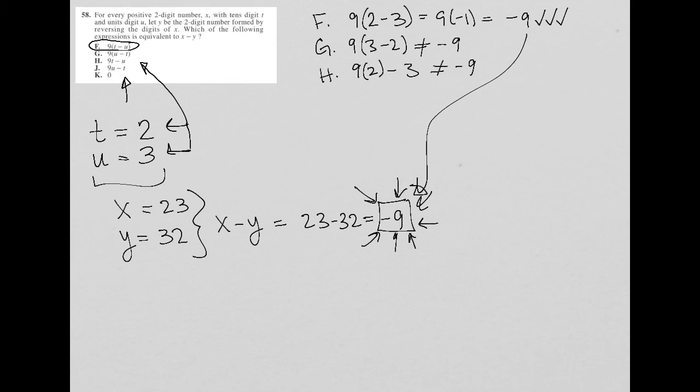And J is equal to nine times U, so that's nine times three minus two. That also does not equal negative nine, that'd be 25. And choice K, of course, does not equal negative nine because it's zero. So now I'm very confident that F is correct and I can move on with confidence to the next question.